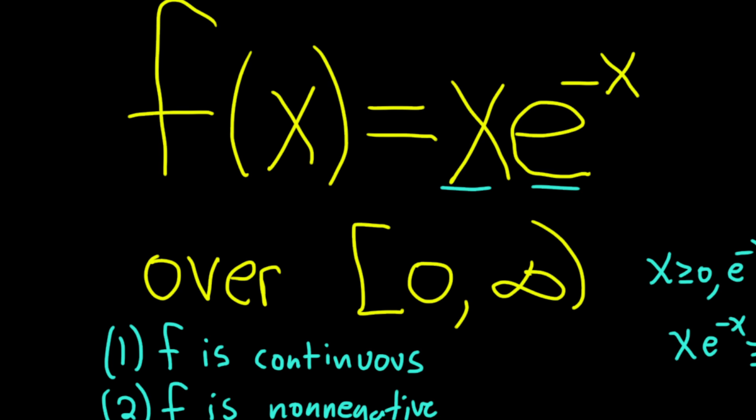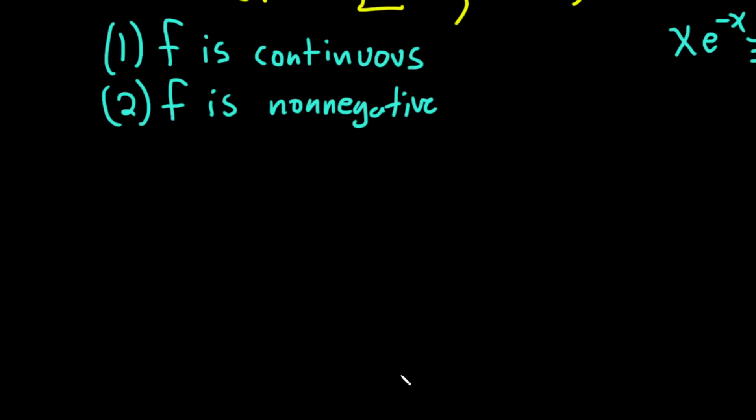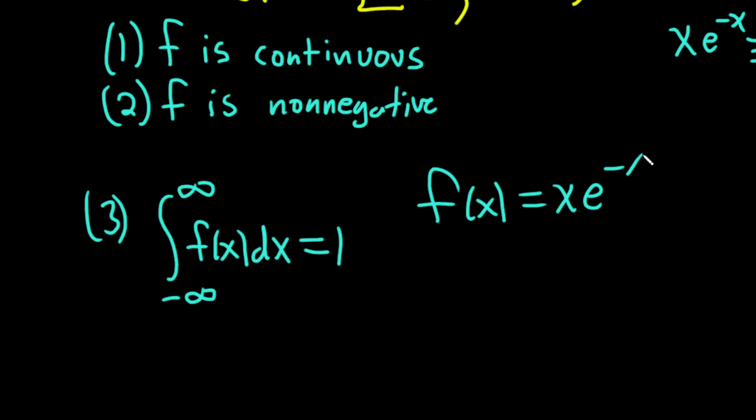So it's always non-negative. And then the third condition is going to be perhaps the biggest one to show. We have to show that if we integrate from negative infinity to infinity of f of x with respect to x, that we actually get one. So negative infinity to infinity of f of x dx.